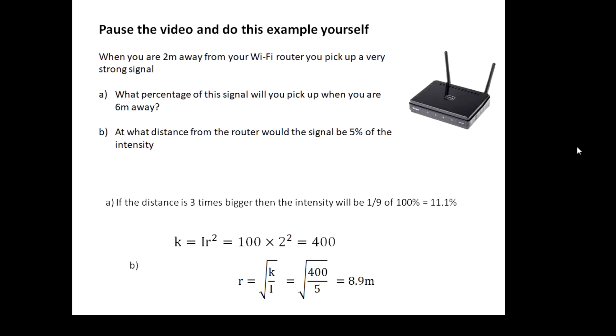Part b, I've worked out the value of k. Okay, if I say the intensity is 100 percent at 2 meters, then that gives me a value of k is 400. And then next, I said it was quite tricky, is I work out the value of r where the intensity is 5 percent, and I get 8.9 meters, which is probably why you don't get a very good Wi-Fi signal in the garden.